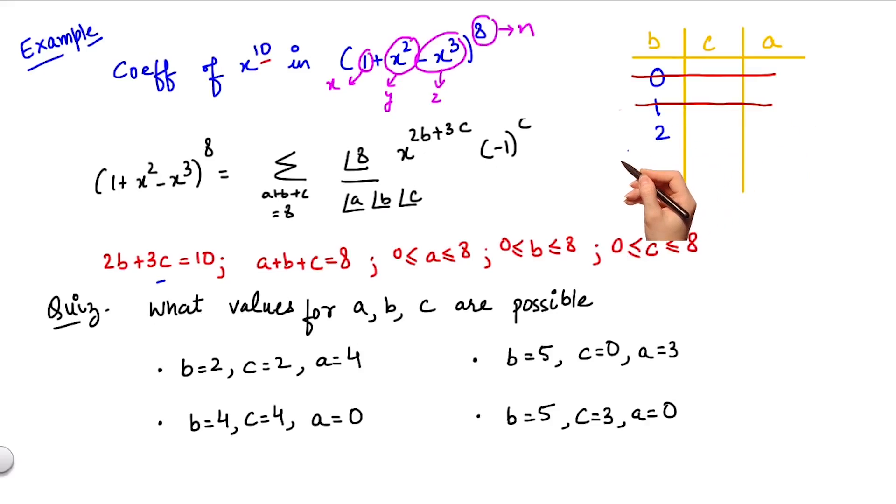Let's move to b equals 2. For b equals 2, we can see 10 minus 4 becomes 6, hence c becomes equal to 2. So this seems likely. From here, I can find out that b plus c would be 4, therefore a would again be 4.